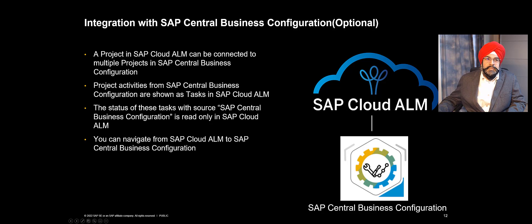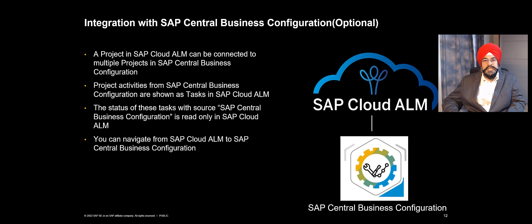Then we come to the optional step of integration with SAP Central Business Configuration. If you have enabled this configuration, the dropdown for integration scenario will be enabled and you can select an integration scenario. What you can do after this integration is set up is connect multiple projects in SAP Central Business Configuration to a single project in SAP Cloud ALM. That way the project activities coming from SAP Central Business Configuration are replicated into SAP Cloud ALM as tasks with a dedicated source. Those tasks are set to read-only in SAP Cloud ALM because the status of those project activities can only be changed on the SAP Central Business Configuration side.